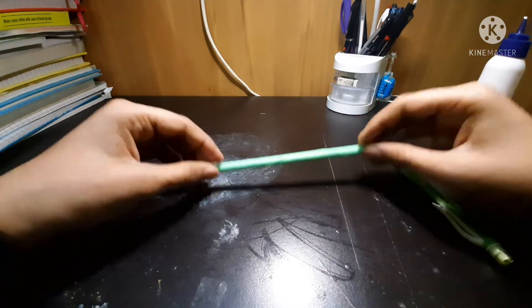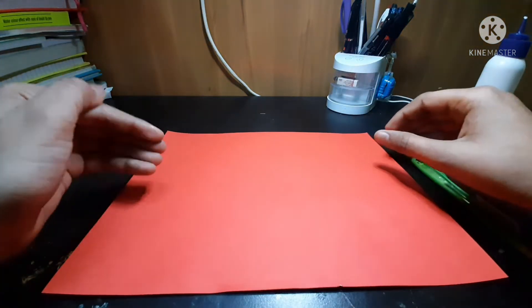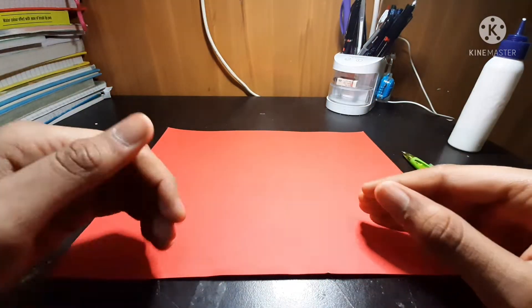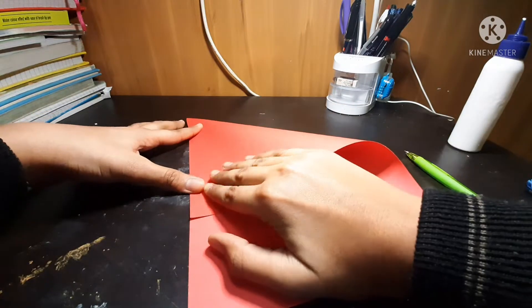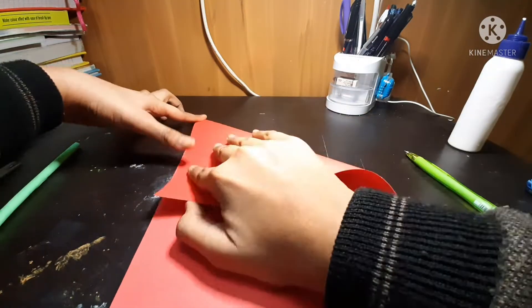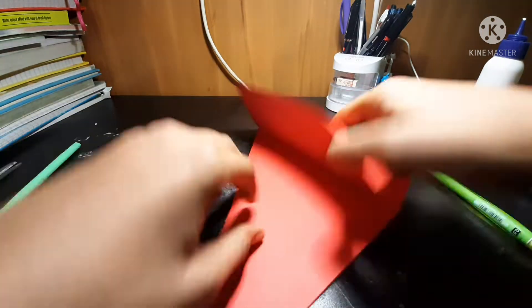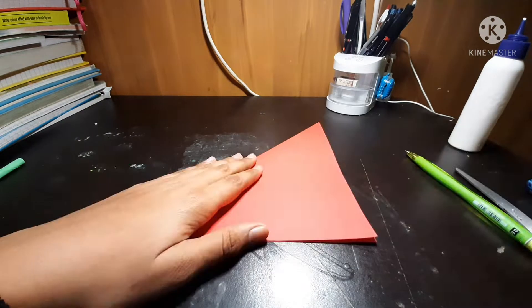Yeah, it's done. So guys, now we have to make the flower. For making the flower we need red sheets and here it is. Now we have to just do it like this. As you can see here, I have to just fold it and cut out the extra part.